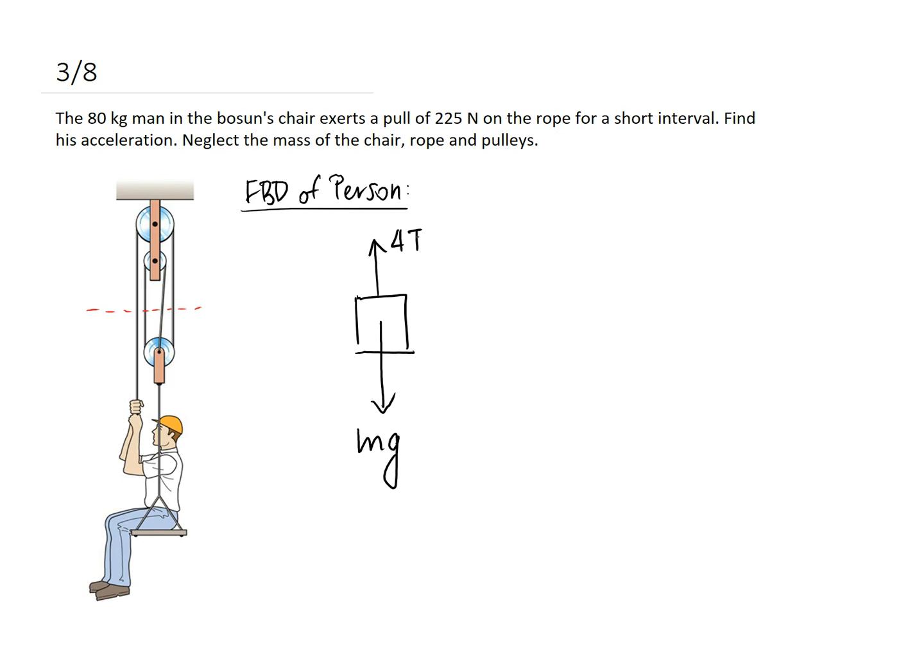It's important to note that if we weren't neglecting the mass and the inertia of the pulleys, then we wouldn't be able to make it so simple. The tension of the rope wouldn't be the same the whole way around. But because we are neglecting it, tension in the rope is equal throughout. You have to cut through four different lines in order to cut him off, so that means we're going to have four T's in here.